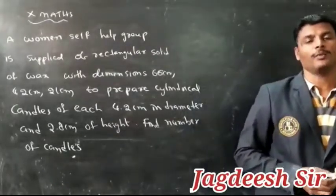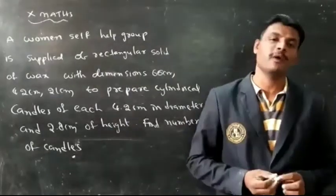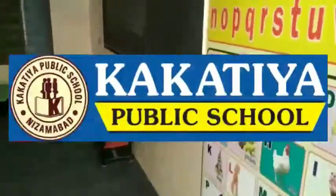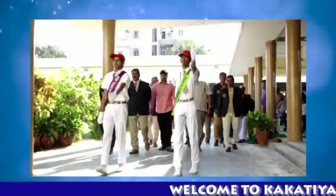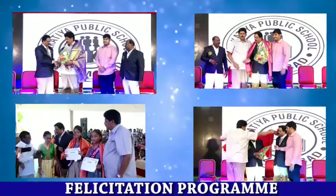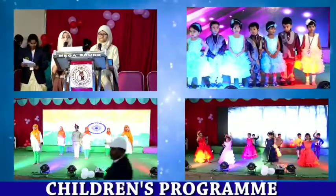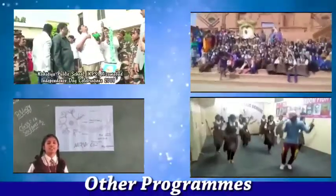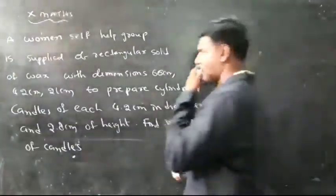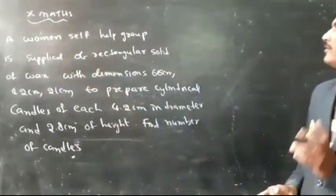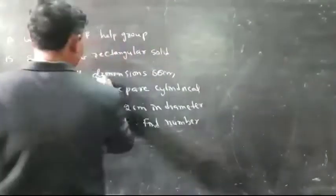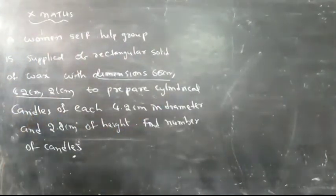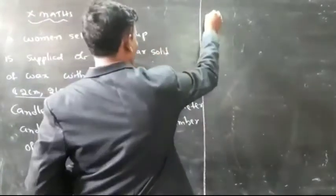Good morning class. Today I am going to explain mensuration from chapter 10.4 HSS problems. The lesson involves a woman self-help group supplied with rectangular solid wax pads with dimensions 66 centimeters, 42 centimeters, and 21 centimeters. That is the shape of a cuboid.